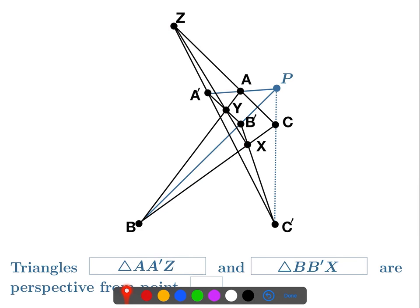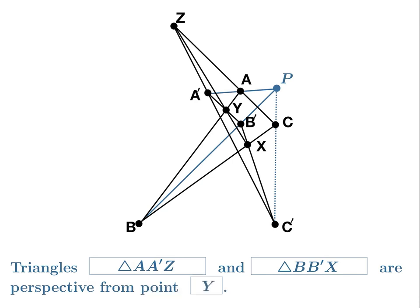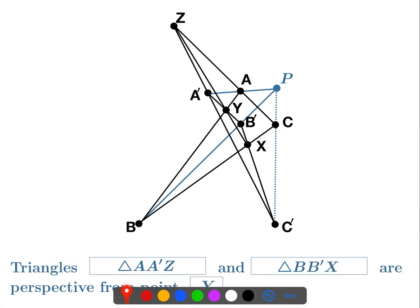If we take the line through the corresponding first points A and B, that goes through Y. The line through A' and B' goes through Y. And the line through Z and X also goes through Y. So these two triangles are in fact perspective from the point Y. That means by Desargues' theorem they're perspective from a line, and that line goes through P, C, and C' — meaning the line through C and C' goes through P.